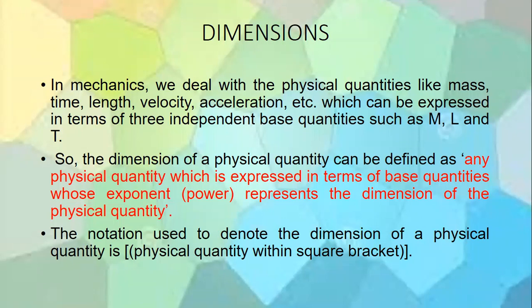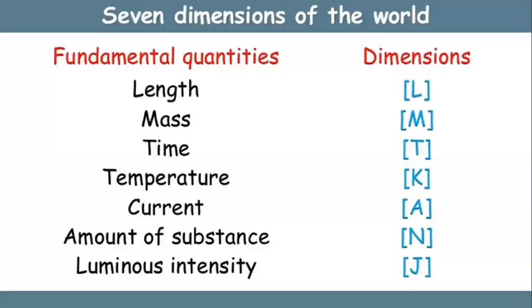The notation used to denote the dimension of a physical quantity is to write the physical quantity within square brackets. There are seven fundamental dimensions: length (L), mass (M), time (T), temperature (K), current (A), amount of substance (N), and luminous intensity (G).